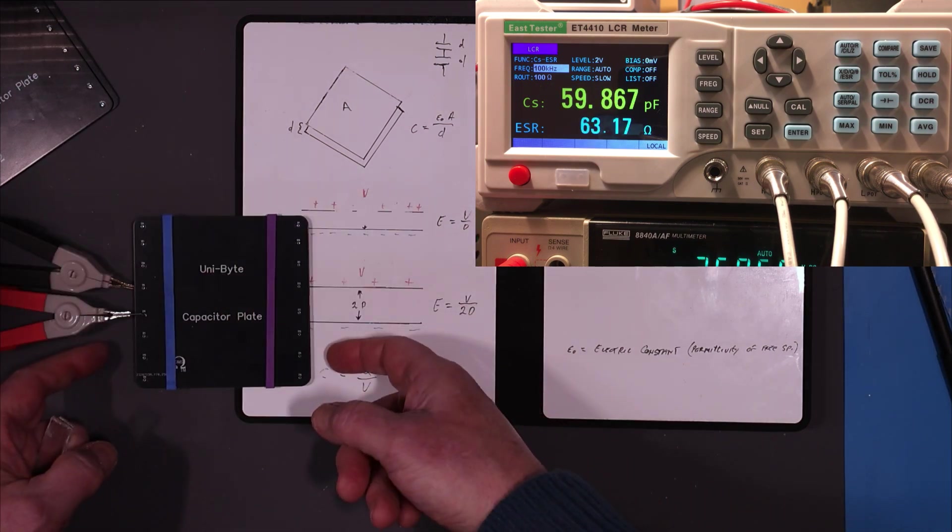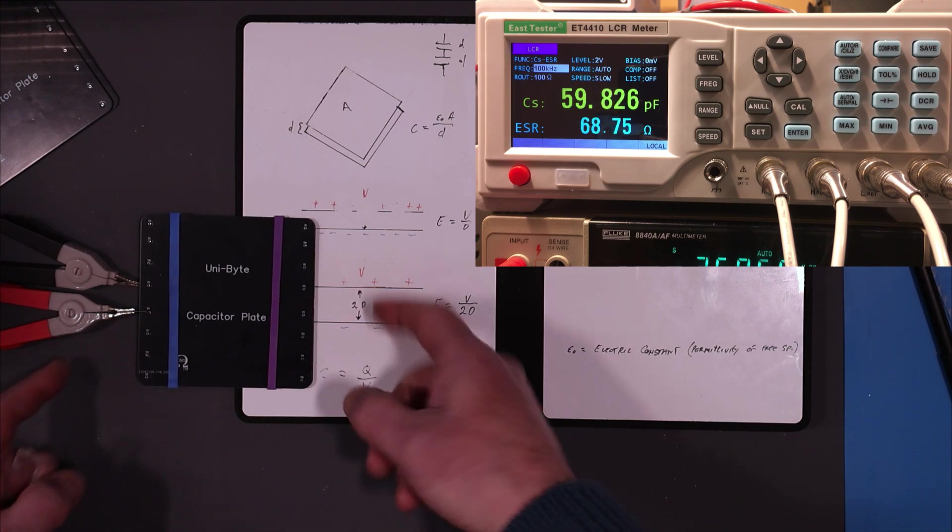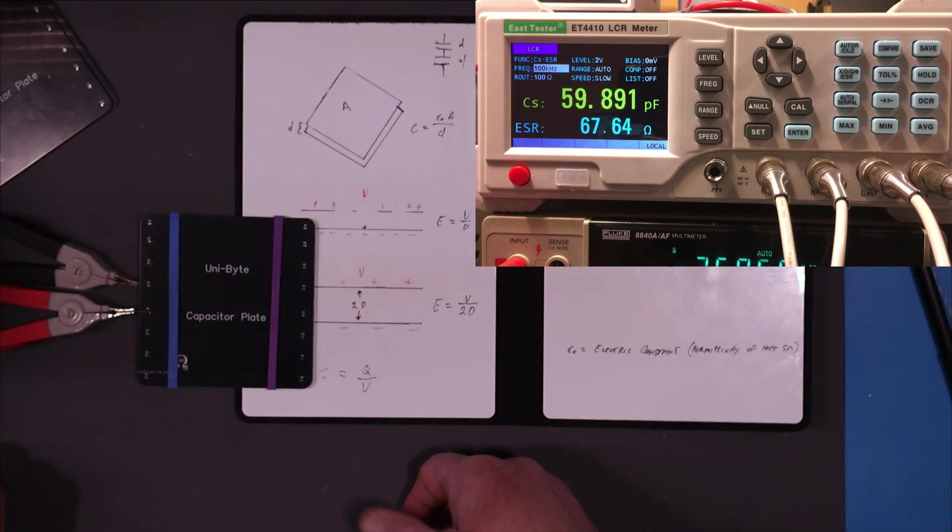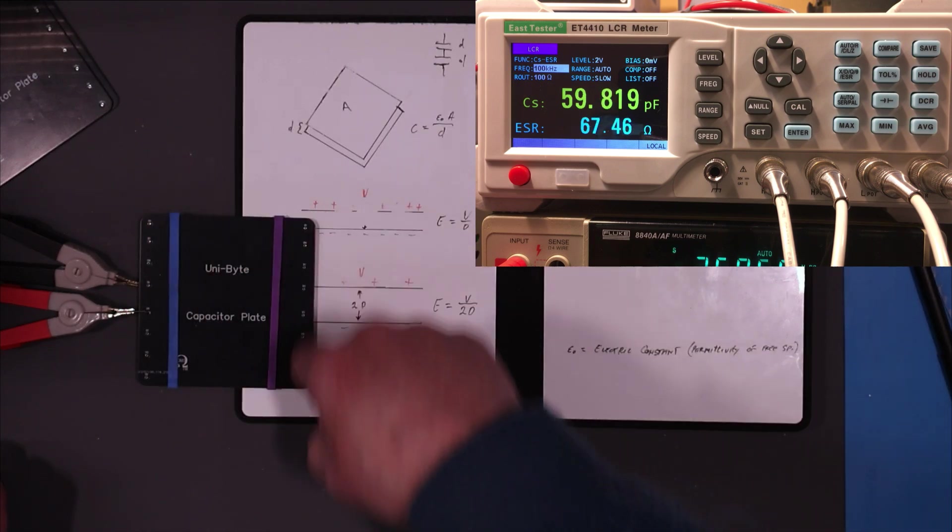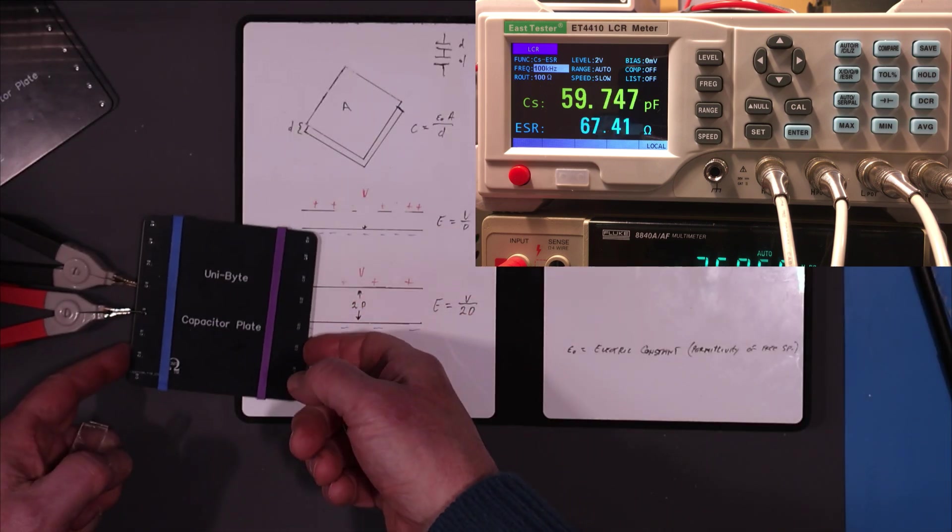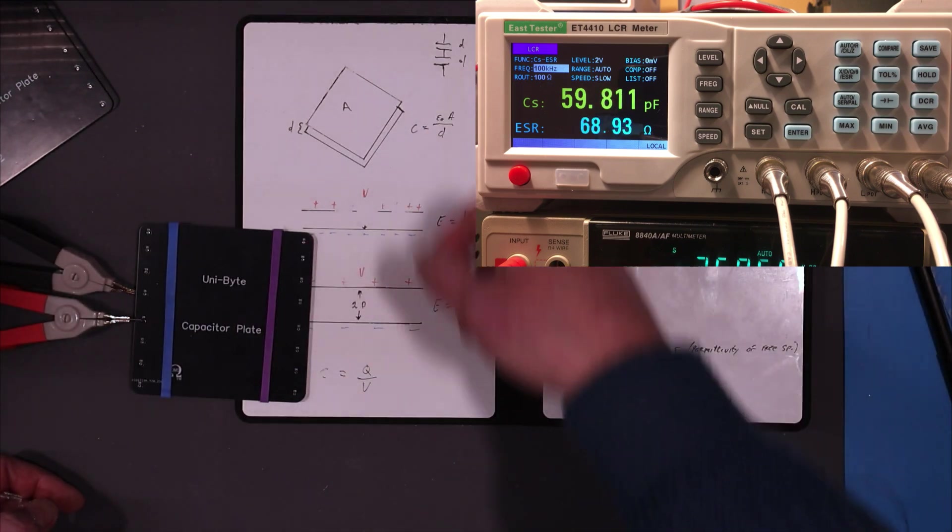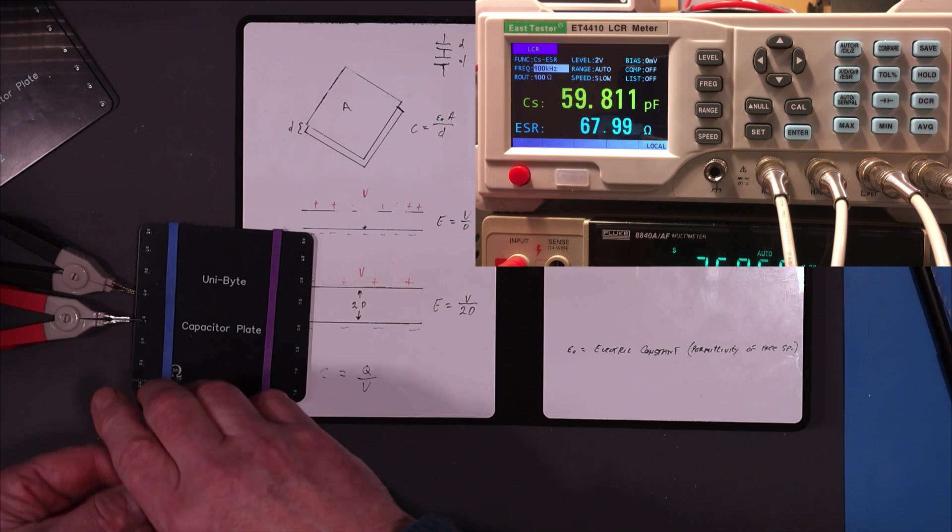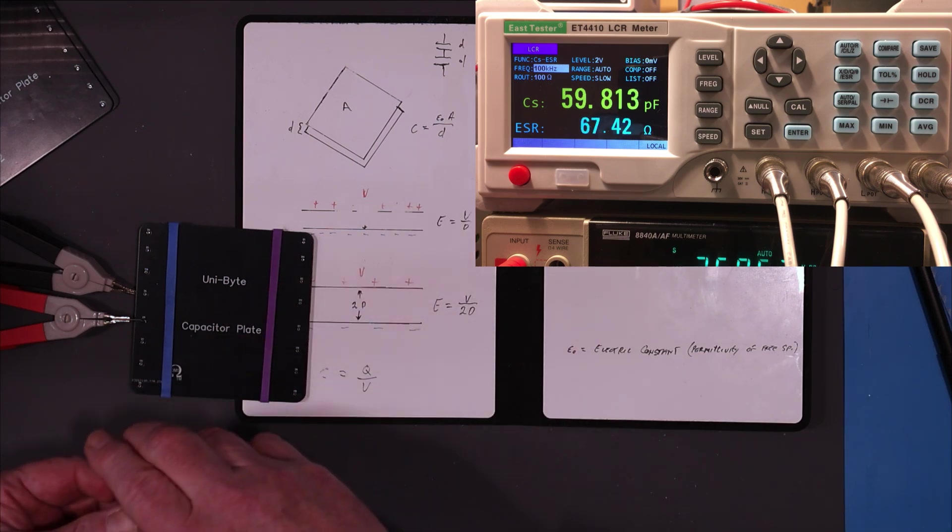It looks like it's about maybe 1.5mm or so. We're not going to do the calculation on these, we're going to make some observations. I'll get a meter up here, and we're going to connect this up and see what the capacitance is. It looks like we've got about 60pF with the way this is laid out.